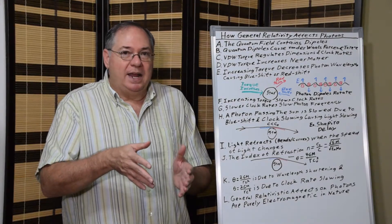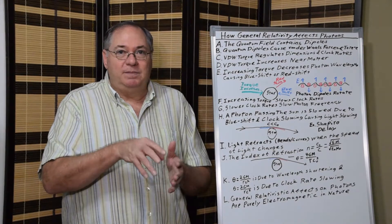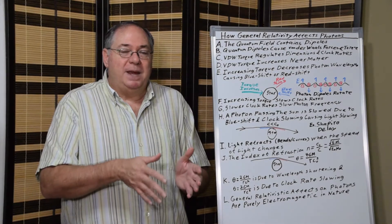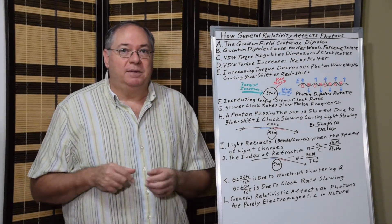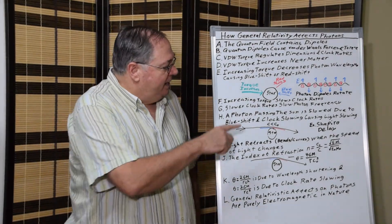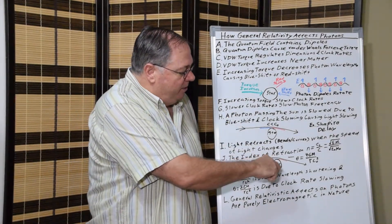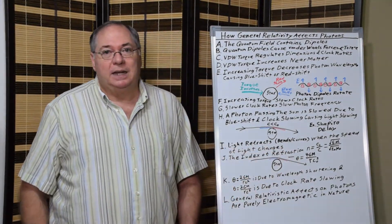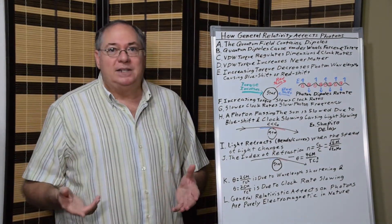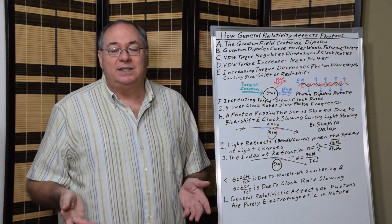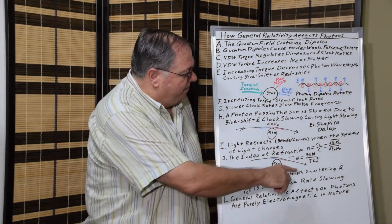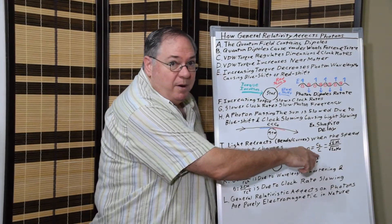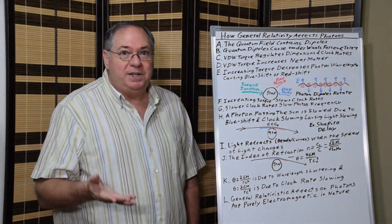We can get the relationship of sine theta of the angles based on the amount of light slowing. So when we have light slowing as a photon approaches near a star, it will cause bending. This is just basic index of refraction. The index of refraction is the speed of light in a vacuum over the speed of light in the material.